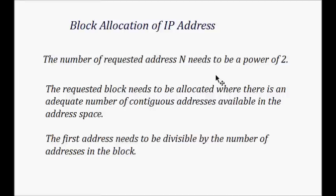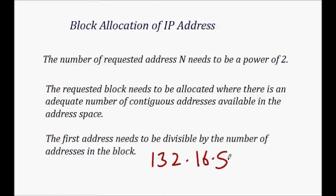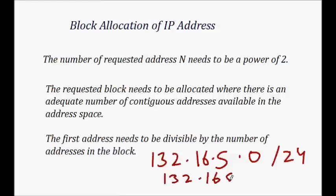The requested block should be a power of two, and it should be allocated such that there is an adequate number of contiguous addresses available in the address space. For example, if the first address of your network is 132.16.5.0/24, you can have addresses ranging up to 132.16.5.255. Allocated addresses should be contiguous so you can route and make subnets better.